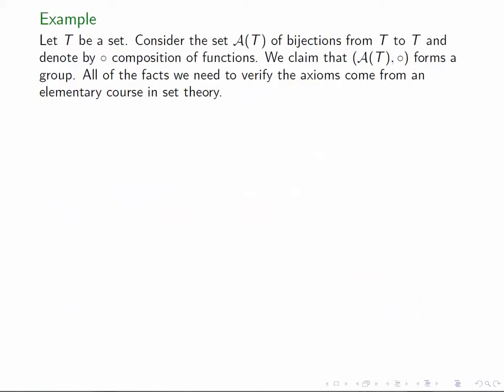Let's look at another very important example, the set of all bijections on a set. Let T be any set and let A(T) be the set of bijections from T to T. Let's let our operation be composition of functions. We're going to show that this makes a group, and all of the facts we need are just facts that we learn in an elementary course in set theory, which is assumed for this course.